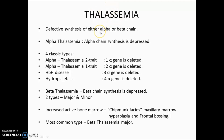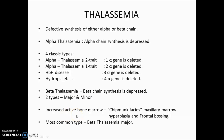In thalassemia, there can be a defect in both alpha or beta chains. Alpha thalassemia has four types: trait-2 (one gene deleted), trait-1 (two deleted), HbH disease (three deleted), and hydrops fetalis (four deleted) — HbH and hydrops fetalis have very poor prognosis. Beta thalassemia has two types: major and minor, with major being most common. The commonest feature is increased bone marrow activity; clinically you can see chipmunk face and frontal bossing.